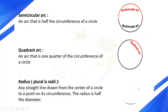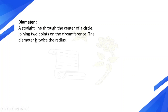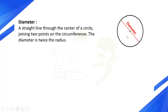Radius — plural is radii: any straight line drawn from the center of the circle to a point on its circumference. The radius is half the diameter. Diameter: a straight line through the center of the circle joining two points of the circumference. The diameter is twice the radius.